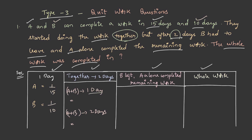First, let's calculate their combined work for one day: 1/15 plus 1/10 equals 1/6. This is A and B's combined part of work in one day. So for two days it becomes 1/6 multiplied by 2, which is 1/3. After this, B left and A alone completed the remaining work.